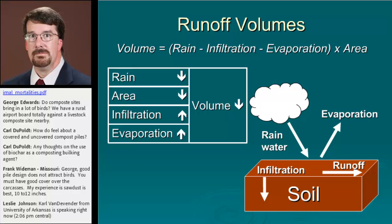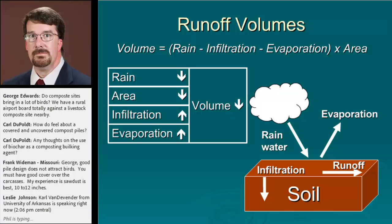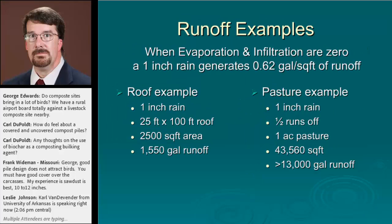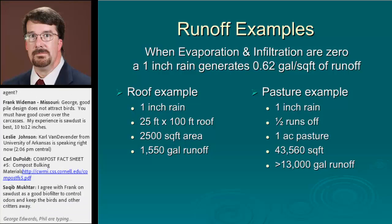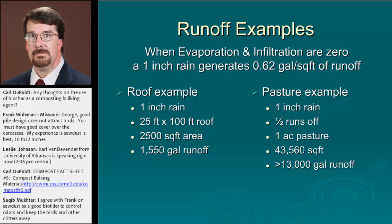When rain lands on the surface of the soil, really only three things can happen to it: it can infiltrate into the soil, it can run off the soil, or it can evaporate back into the air. The soil conditions and the amount of vegetation play a role in how much goes to each fraction. To give you a feel for runoff volumes, each inch of rain on a horizontal area will generate about 0.62 gallons per square foot of runoff if evaporation and infiltration are zero.